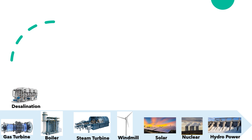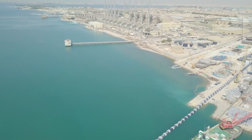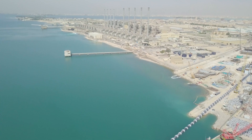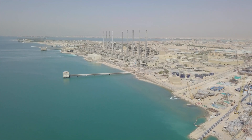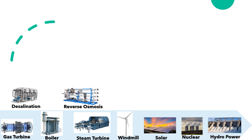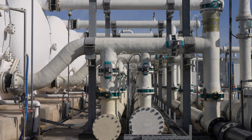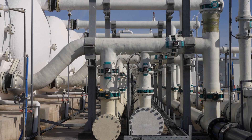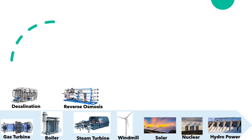A desalination plant using thermal desalination technology based on a flashing process produces distilled quality water directly from seawater. Reverse osmosis is a common process to purify or desalinate contaminated water by forcing water through a membrane or filter.